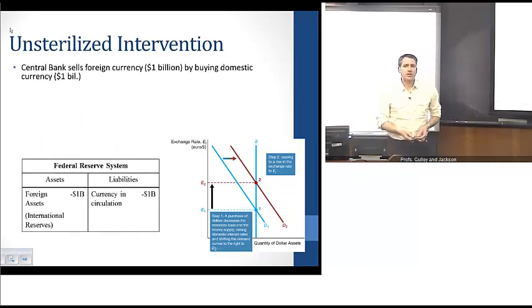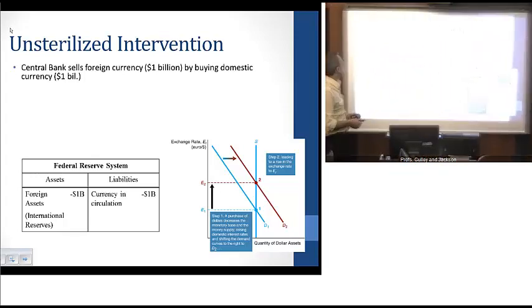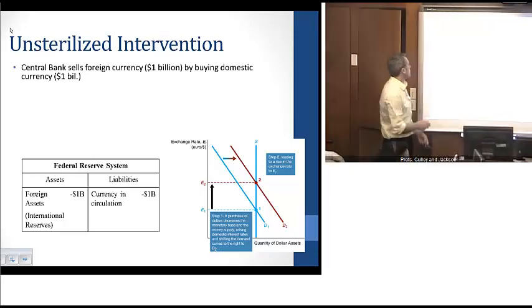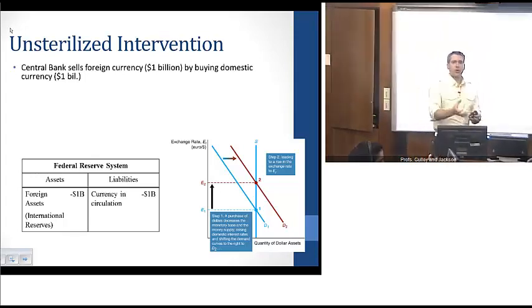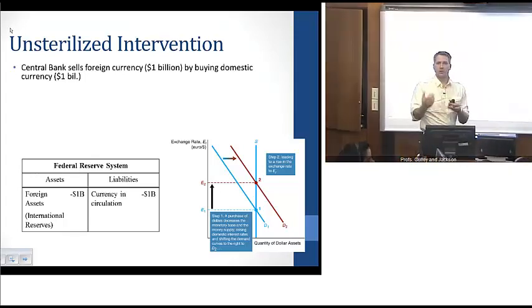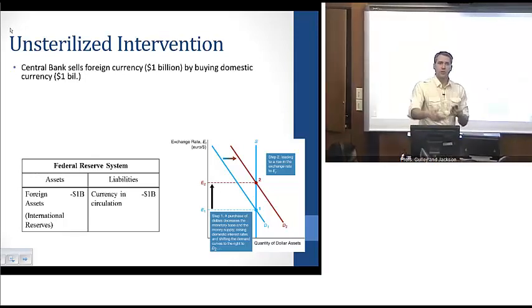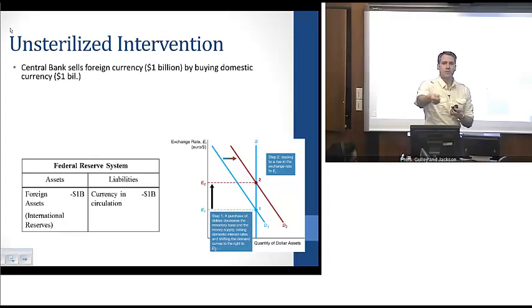Here's an example of an unsterilized intervention by the central bank. We can think of the Fed selling foreign currency and buying domestic currency. They're using their store of international reserves — foreign currency such as euros or yen — to buy up domestic dollars already floating around in circulation, removing a billion dollars of currency from circulation and offloading a billion dollars of international reserves.